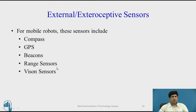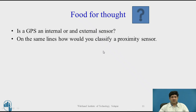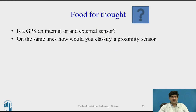Something for you to think about: is GPS an internal or external sensor? On the same lines, how would you classify a proximity sensor? I raise this discussion because you may come across sources that contradict each other on this — I have seen this from reputed universities — and this often creates confusion among students. I have decided to include GPS under external sensors because it gives the position of the robot in the environment rather than the internal state of the robot itself. The key is to understand the context in which a particular author has made their classification.